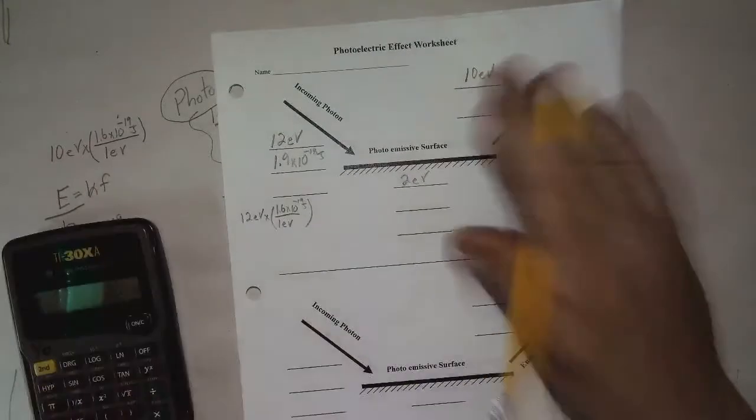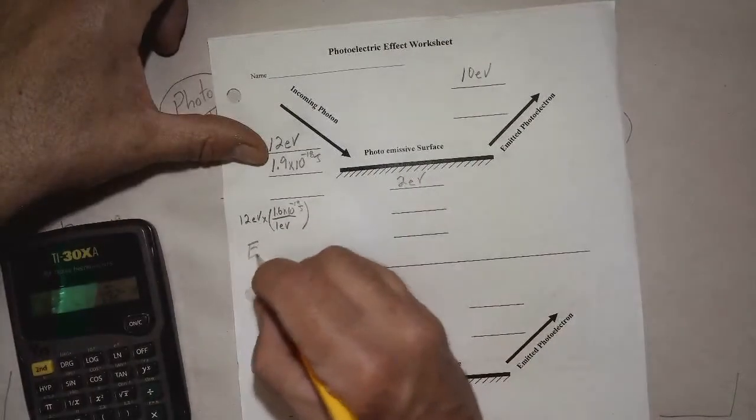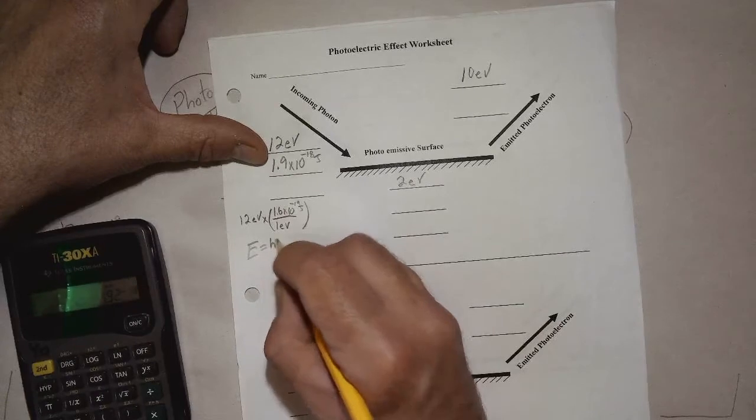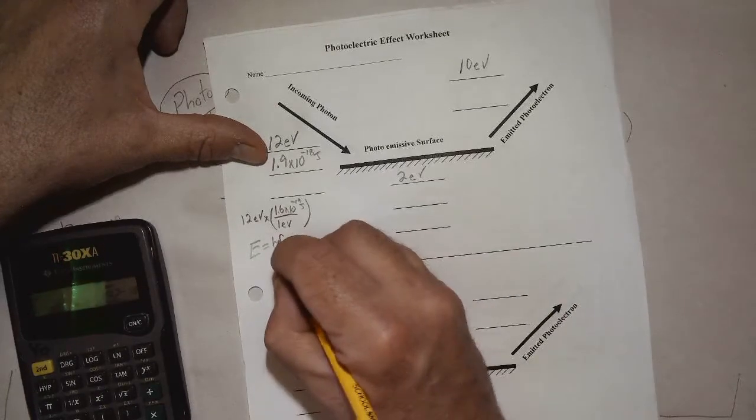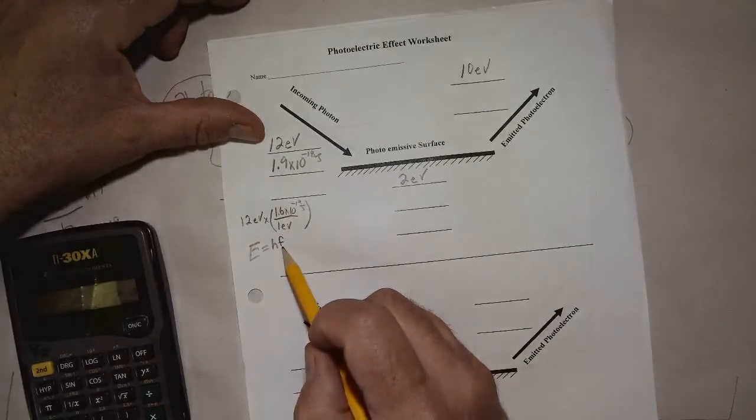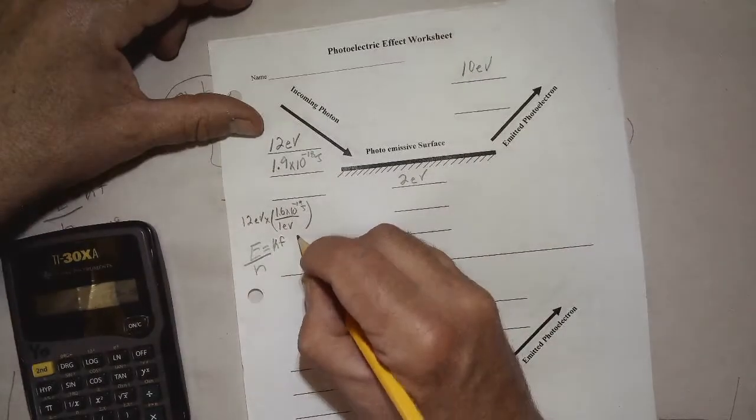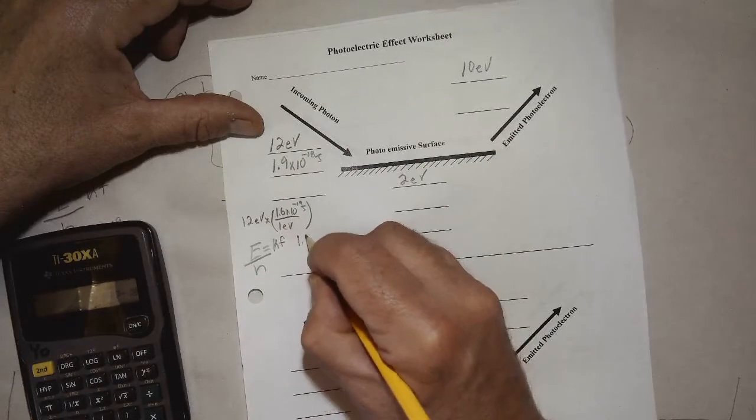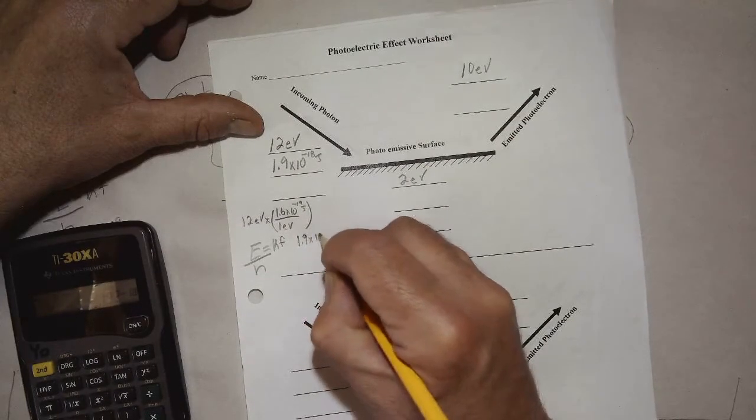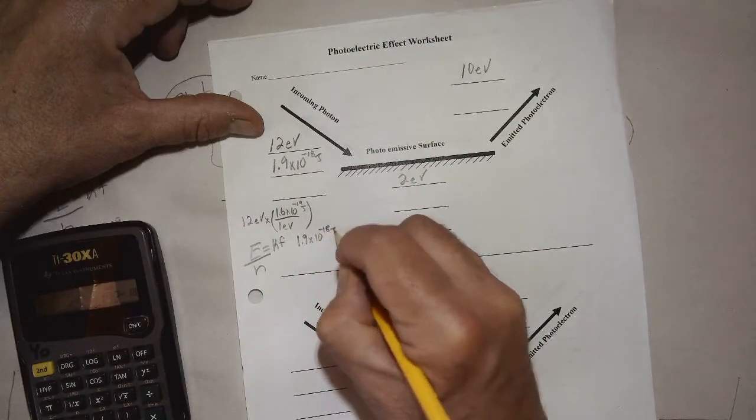And let's convert that right away using E equals HF. Let's convert that to a frequency. So E divided by H is going to equal F. So the energy is 1.9 times 10 to the minus 18th joules.